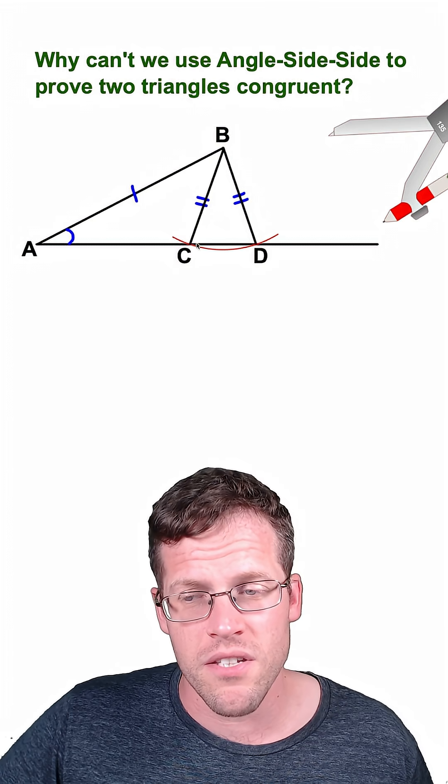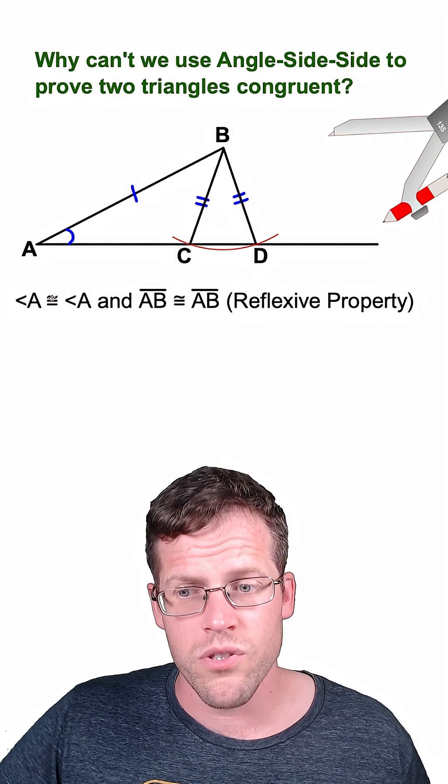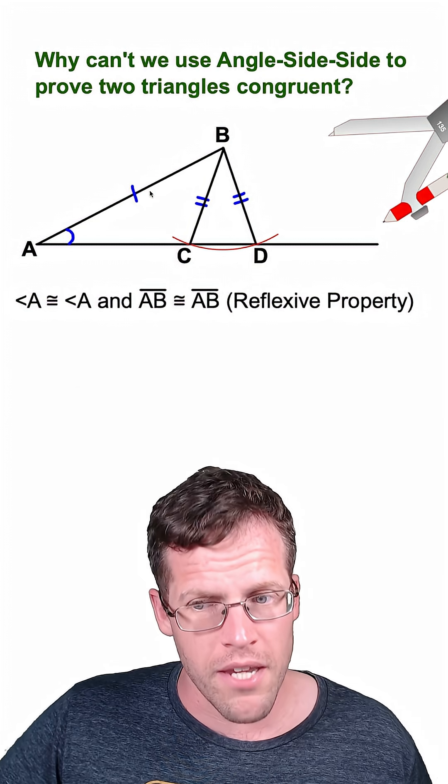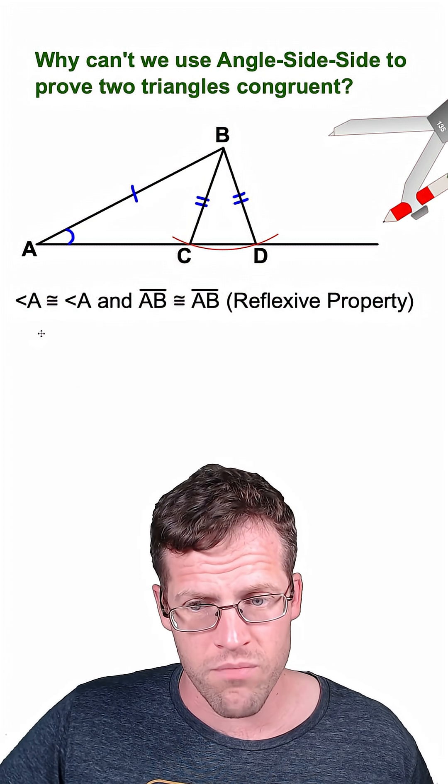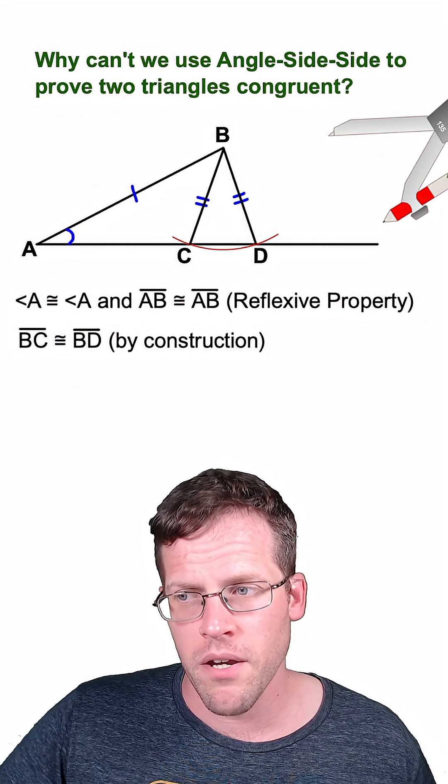So now we have triangle ABC and triangle ABD, and we could say that angle A is congruent to itself, and line segment AB is congruent to itself by the reflexive property. We could also say that BC is congruent to BD by construction.